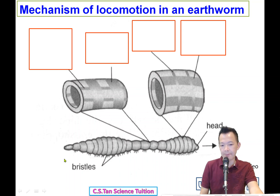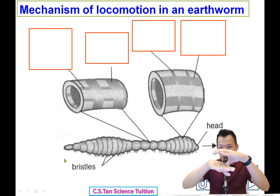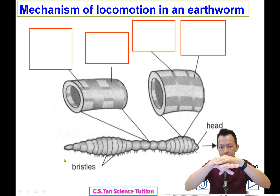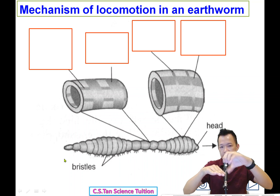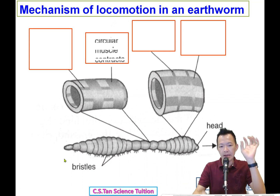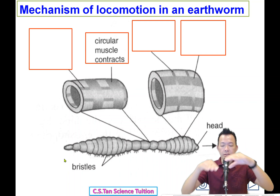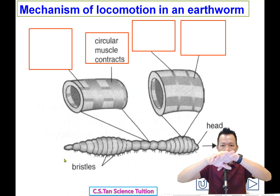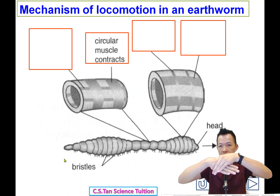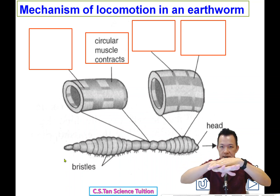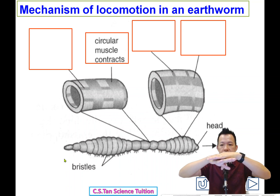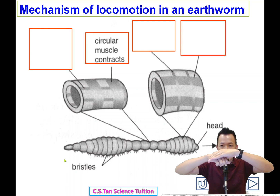So at the beginning, the first step: the circular muscle contracts. When the circular muscle contracts, the longitudinal muscle — the second layer of muscle — at the same time, it will be relaxed. So circular muscle contracts, longitudinal muscle relaxes.